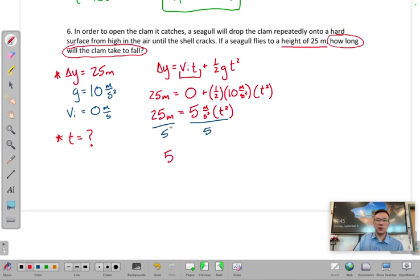But the meters are going to cancel. We're going to be left with second squared, which is correct because this is equal to t squared. We now need to square root both sides of this.